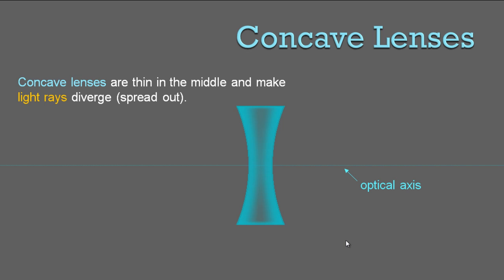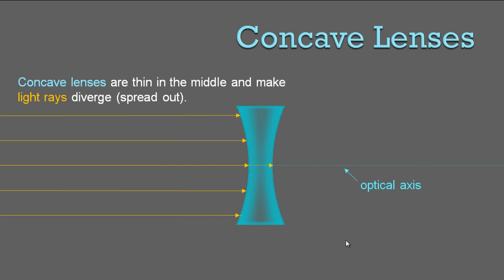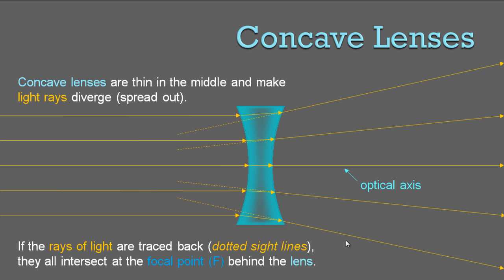Concave lenses are thin in the middle and make light rays diverge or spread out. The light hits the lens and diverges, leaving the lens spread out. If the light rays are traced back using dotted sight lines, they intersect at the focal point behind the lens. Just like in mirrors, the focal point is half of the radius. All the same equations apply — 1 over F equals 1 over DO plus 1 over DI — no new equations, just new ways to draw things.